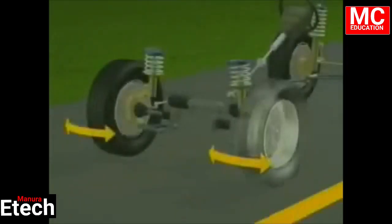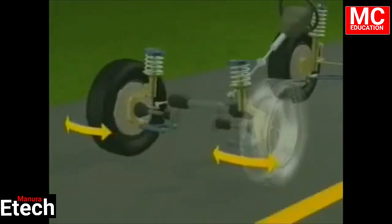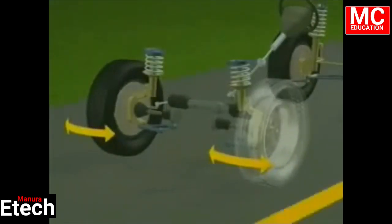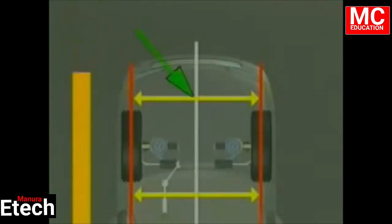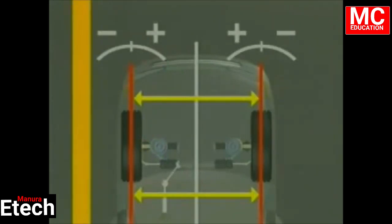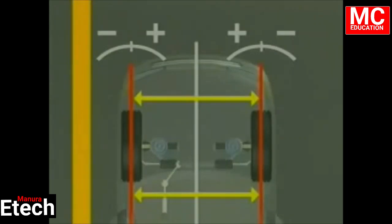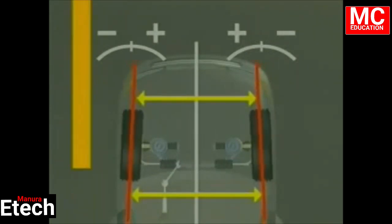The most critical alignment angle is total toe on the steering axle. Excessive positive or negative toe will cause scuffing and wear on the shoulders of the tires. Total toe is defined as the difference in distance measured across the front of the tires compared to the distance measured across the rear of the tires, and is measured in inches or millimeters. Total toe may also be defined as an angular measurement in degrees or in degrees and minutes. Toe is positive or toe-in when the front of the tires are closer together than the rear of the tires.